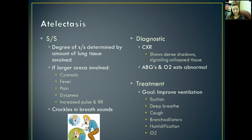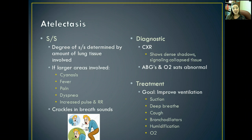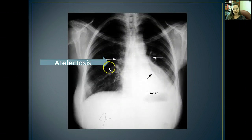To diagnose atelectasis, we can get a chest x-ray, which is going to show dense shadows signaling collapsed tissue. An ABG is going to show abnormal oxygen levels. A peripheral pulse ox is also going to show decreased oxygenation to the peripheral tissues and capillaries. The way to treat it is to improve ventilation as much as possible — suction out the excess fluid and mucus, encourage deep breathing and coughing to bring up secretions, give bronchodilators, humidify the air, and provide supplementary oxygen to help increase perfusion and ventilation efforts. Here's a picture of atelectasis showing the dense white areas signaling that portions of the lung have collapsed.